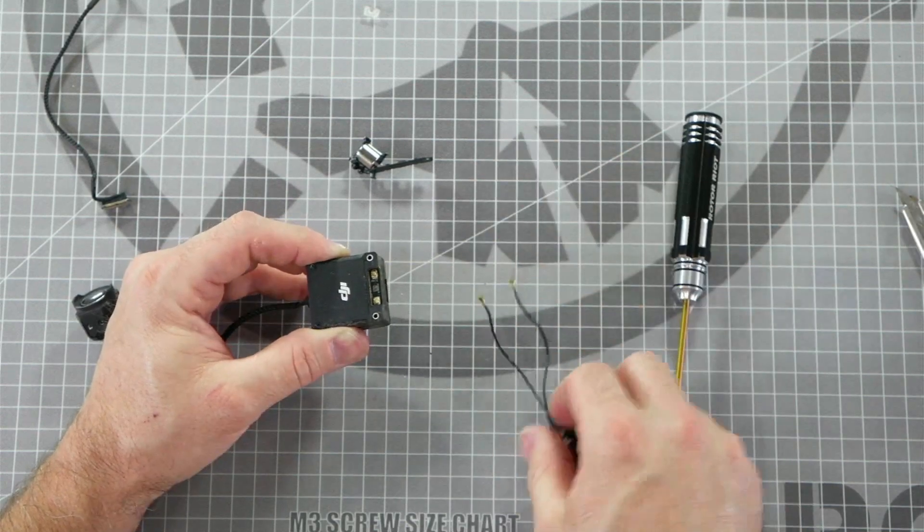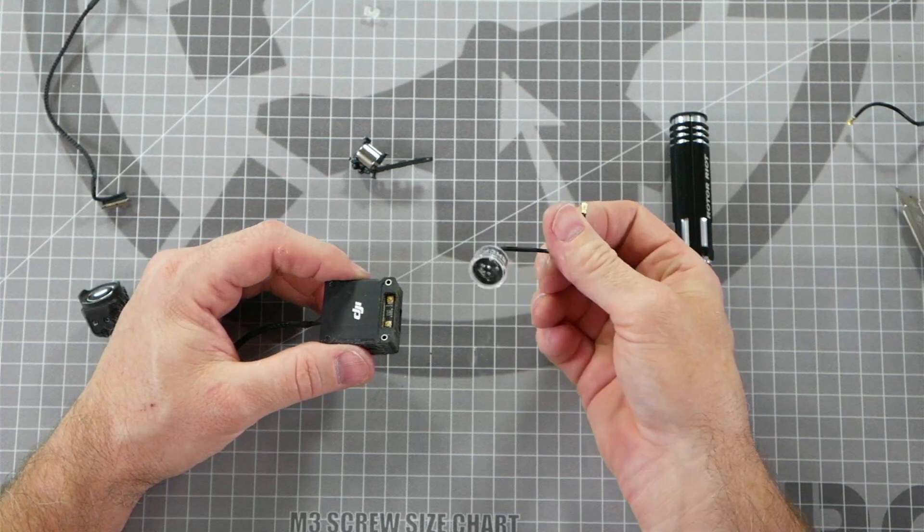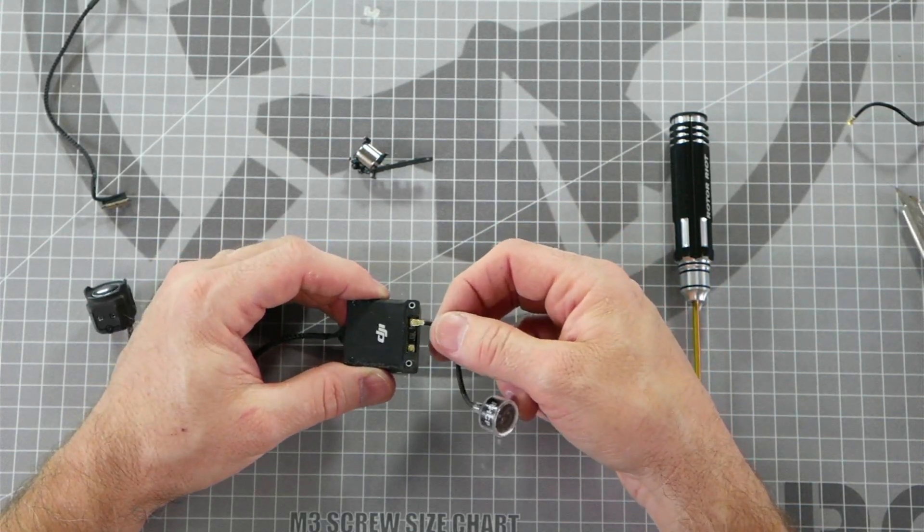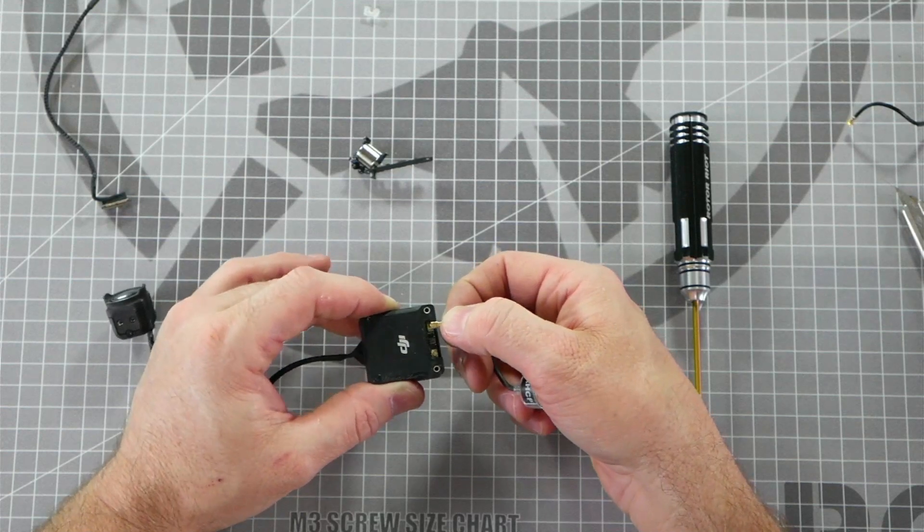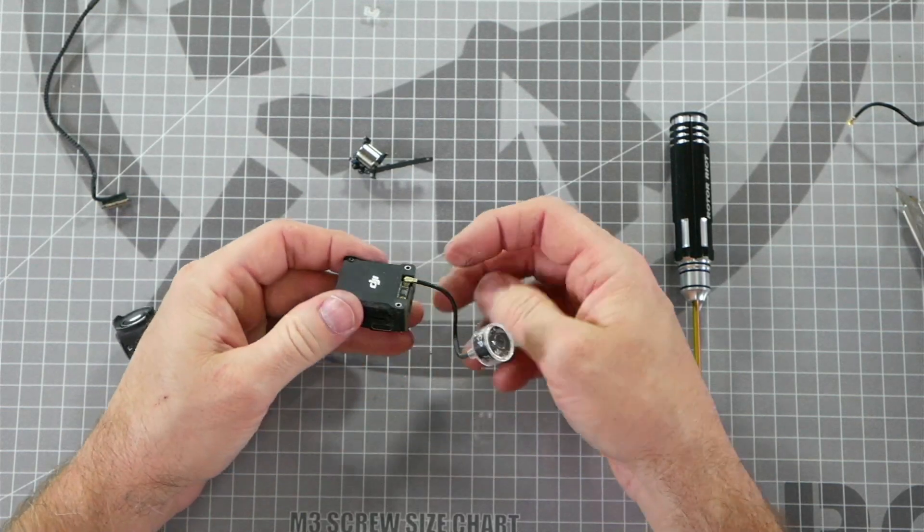Now that you have your stock antenna off, we can install our new antennas. These are my favorite antenna, the 2RC OCP antennas, but any antenna that has a UFL connector should work with this air unit. Just line it up with the UFL connector and press it in place, being very careful to line it up straight.